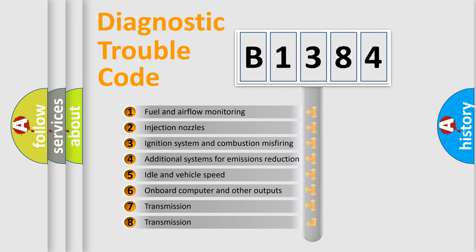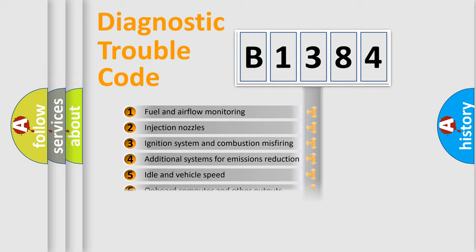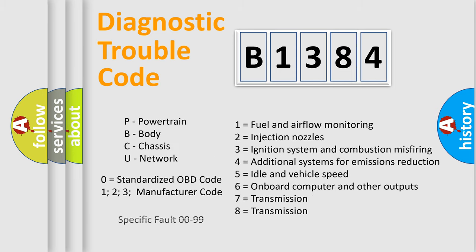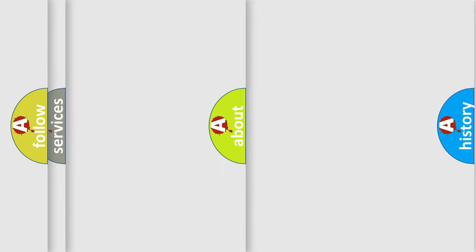The third character specifies a subset of errors. The distribution shown is valid only for the standardized DTC code. Only the last two characters define the specific fault of the group. Let's not forget that such a division is valid only if the second character code is expressed by the number zero.